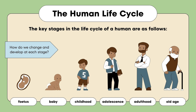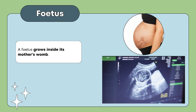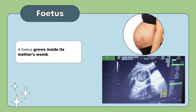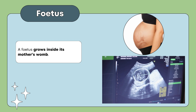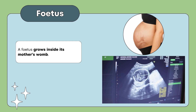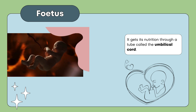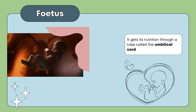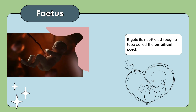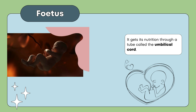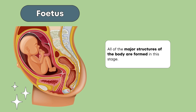Let me explain the stages briefly. At this stage, a fetus grows inside its mother's womb. It gets its nutrition through a tube called the umbilical cord. All the major structures of the body are formed in this stage.